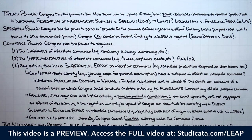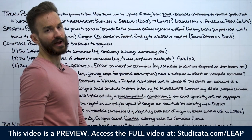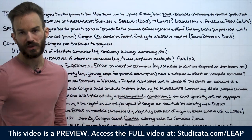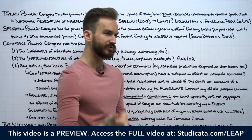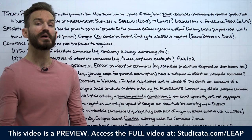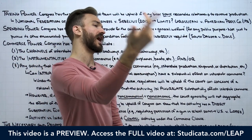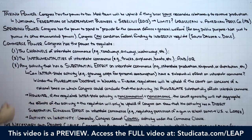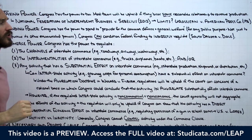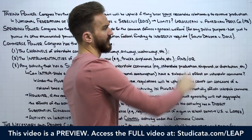Under the taxing power in Article 1, Section 8, Congress has the power to tax. The government needs money to build roads, highways, hospitals, and schools — they raise revenue by taxing citizens and then spend it on things for the general welfare. The rule is that most taxes will be upheld if they bear some reasonable relationship to revenue production.